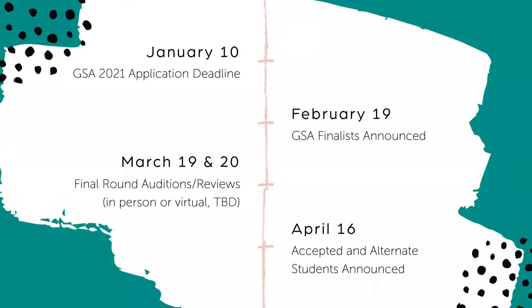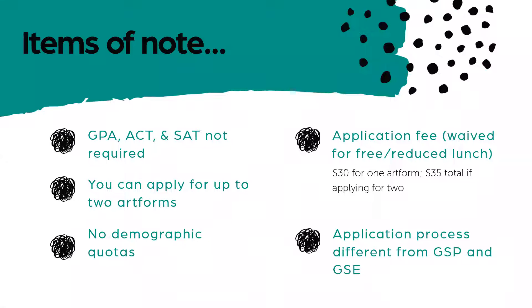We will never ask for your GPA, SAT, or ACT scores. We understand artists often learn differently than the average student, so we seek other indicators of your fit for GSA. Students can apply for up to two art forms, as artists are often multidisciplinary. Instrumentalists can apply on two different instruments, but that counts as your two art forms. There is a $30 application fee, increasing to $35 for two art forms. Students on free or reduced lunch can have the fee completely waived with a click of a button — no questions asked.